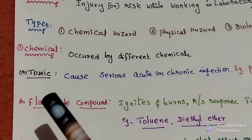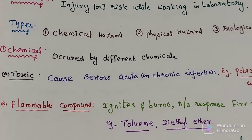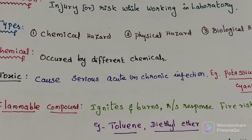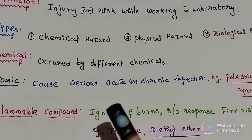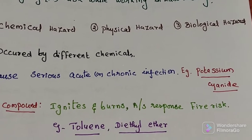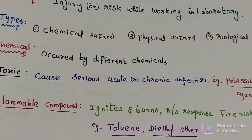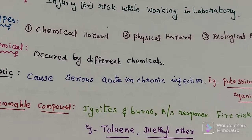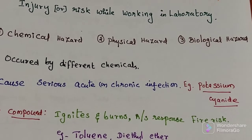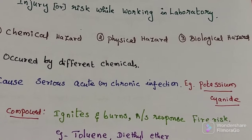The first type is toxic. A chemical which causes serious acute or chronic infection is called toxic. Example: potassium cyanide.